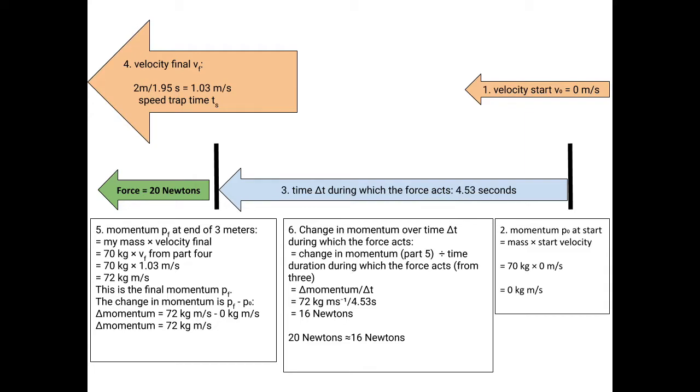During that time, I reached a final velocity, number four, of 1.03 meters per second. So if you take the 70 times the 1.03 in number five, you'll get that I had a final momentum of 72 kilogram meters per second. That was my final momentum. I started with 0, and I ended with a momentum of 72.